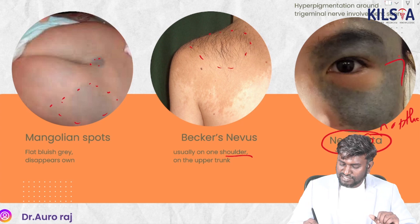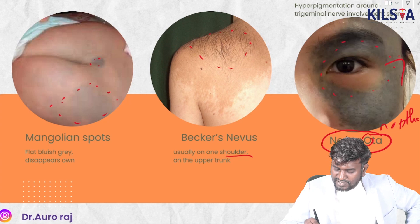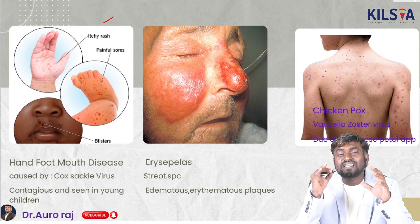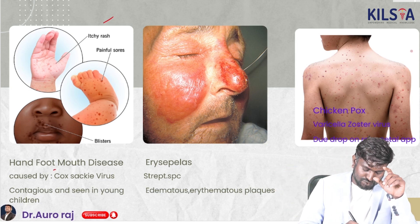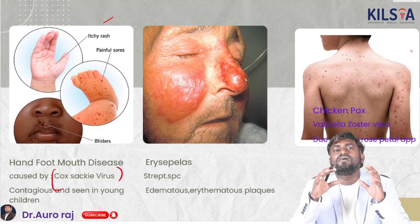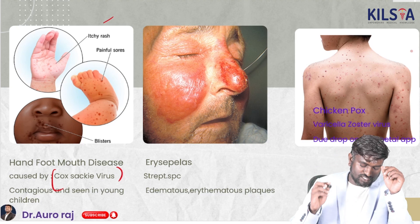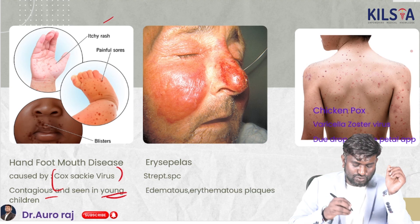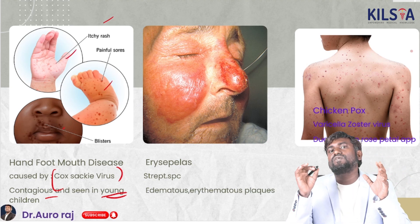Nevus of Ota is due to hypopigmentation around the periorbital region and involves the trigeminal nerve. This image shows hand, foot, and mouth disease, which is caused by Coxsackievirus. It is contagious and mostly seen in young children. As you can see, the hands, feet, and mouth are all involved — that is why it is called hand, foot, and mouth disease.